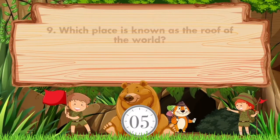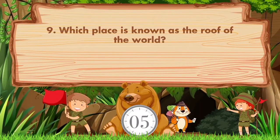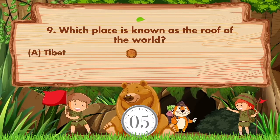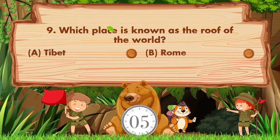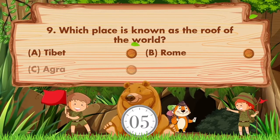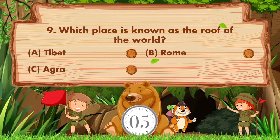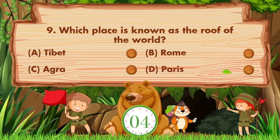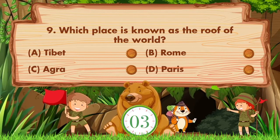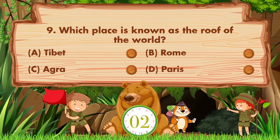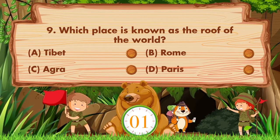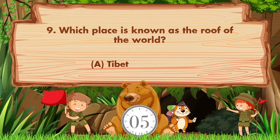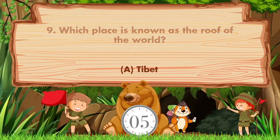Which place is known as the roof of the world? Option A: Tibet, B: Rome, C: Agra, D: Paris. Answer is option A, Tibet.